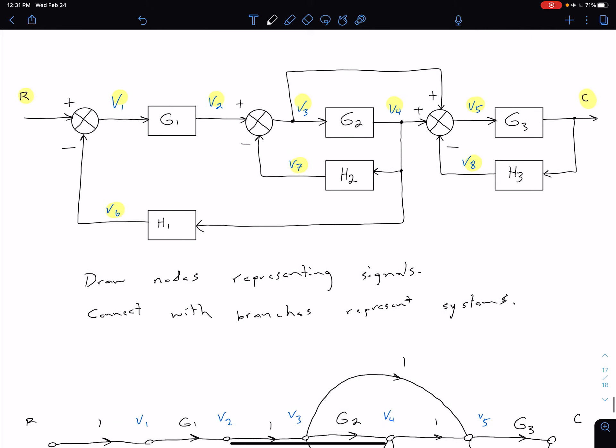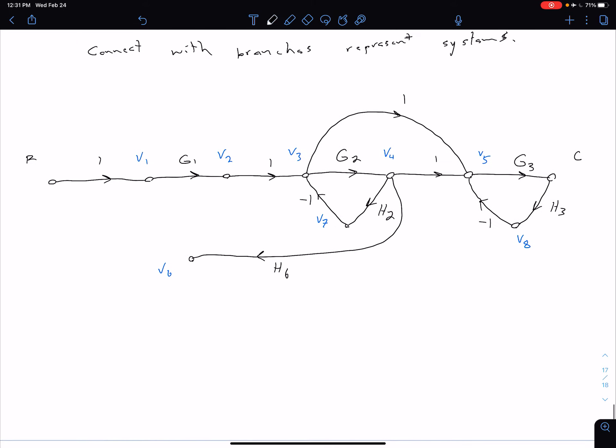And then our V6 is being subtracted to combine and create V1. So again, subtraction at that summing junction means we're going to have a negative one here.